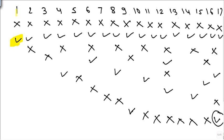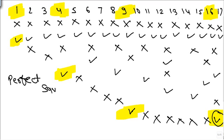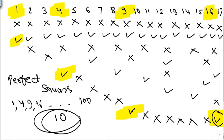So now, as you can see, bulb number 1 at the end will remain on. Bulb number 4 will remain on. Bulb number 9 will remain on. Bulb number 16 will remain on. All these numbers are nothing but perfect squares. So all the perfect squares till 100 are going to remain on: 1, 4, 9, 16, up to 100.